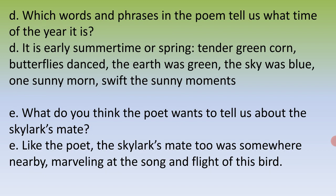Which words and phrases in the poem tell us what time of the year it is? It is early summertime or spring. The clues are: tender green corn, butterflies danced, the earth was green, the sky was blue, one sunny morn, and swift the sunny moments.